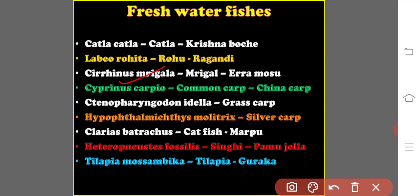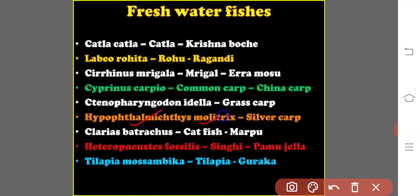Other freshwater fishes include Clarias batrachus, the catfish (vernacular name: marpu); Heteropneustes fossilis, known as singi (vernacular name: palmujala); and Tilapia mozambica, tilapia (vernacular name: guraka), which is abundantly available in Telangana and India. These are the abundantly available and easily grown freshwater fishes.